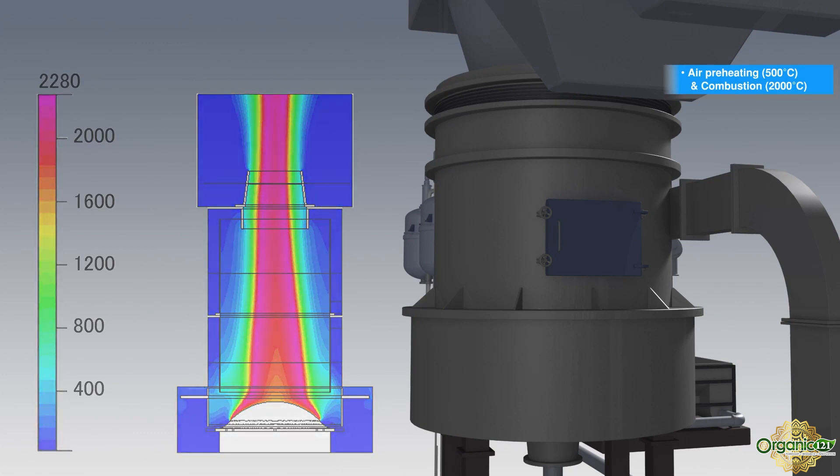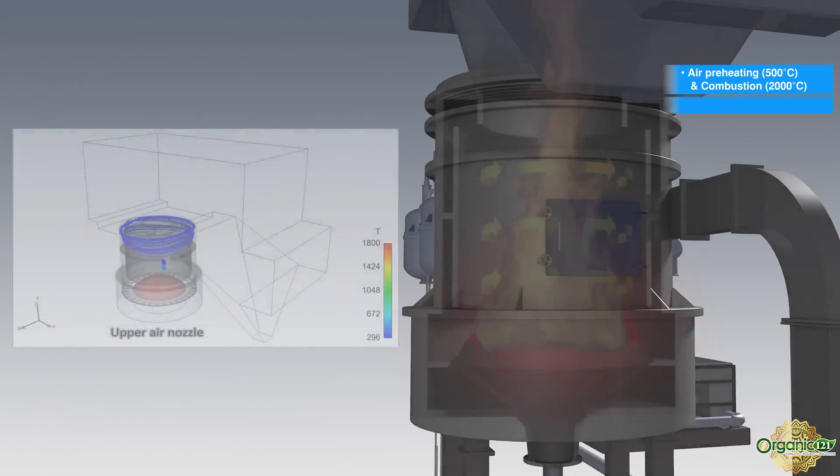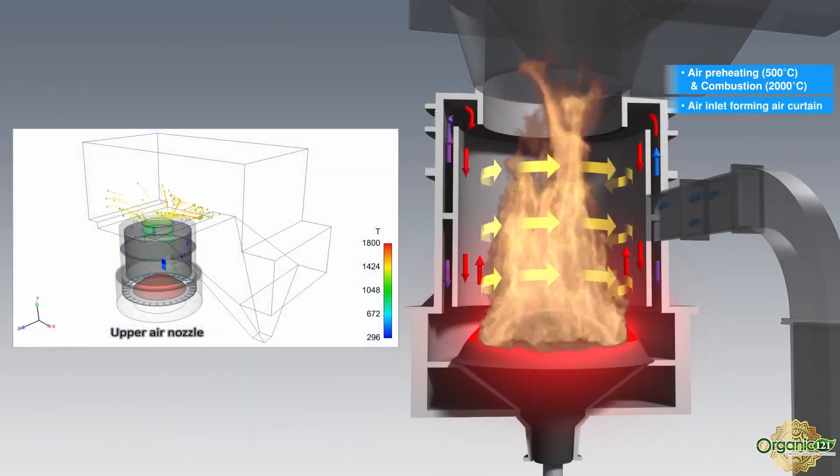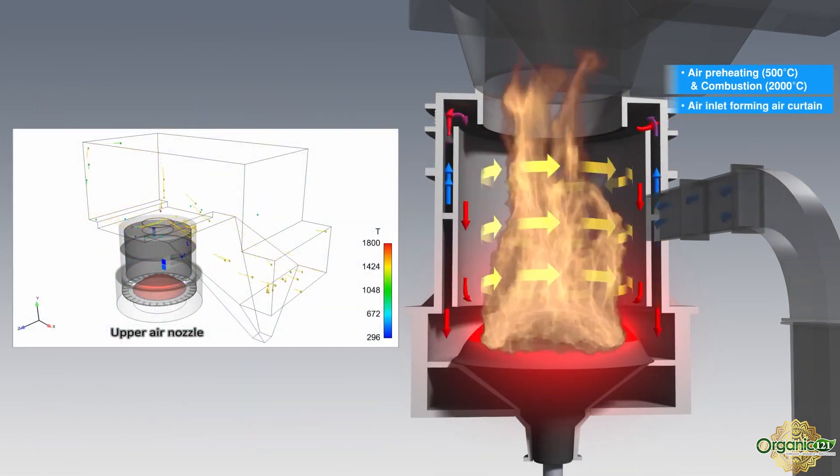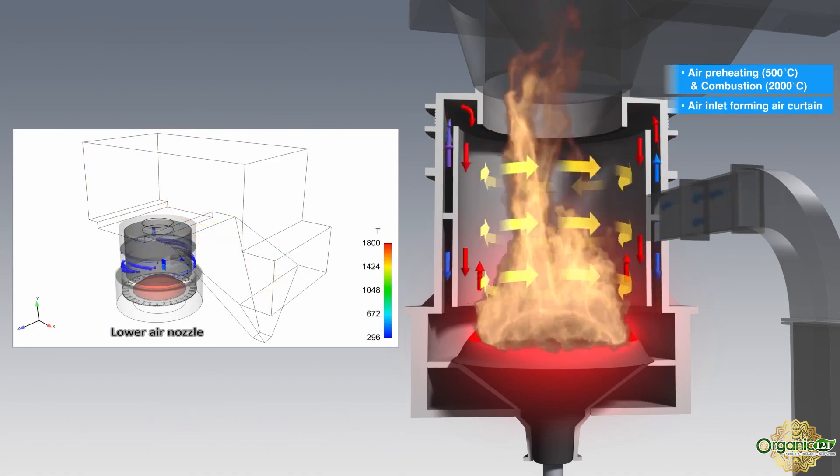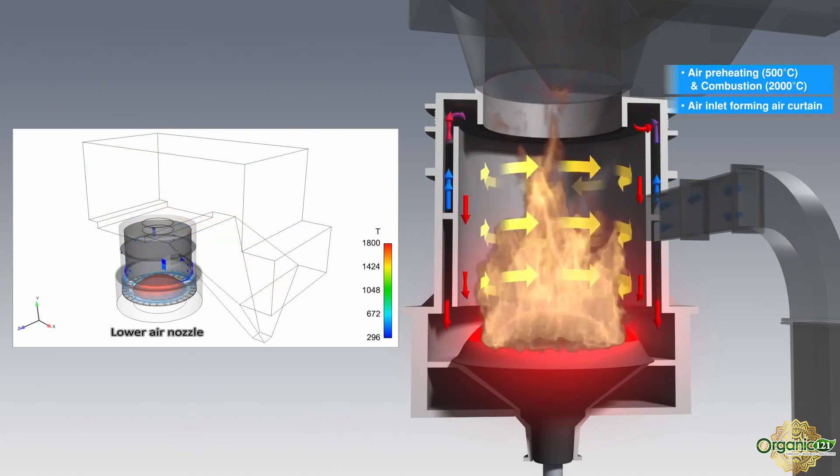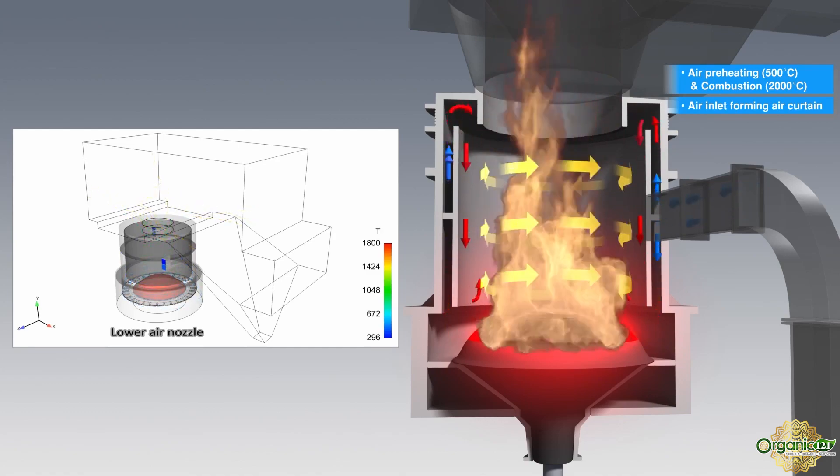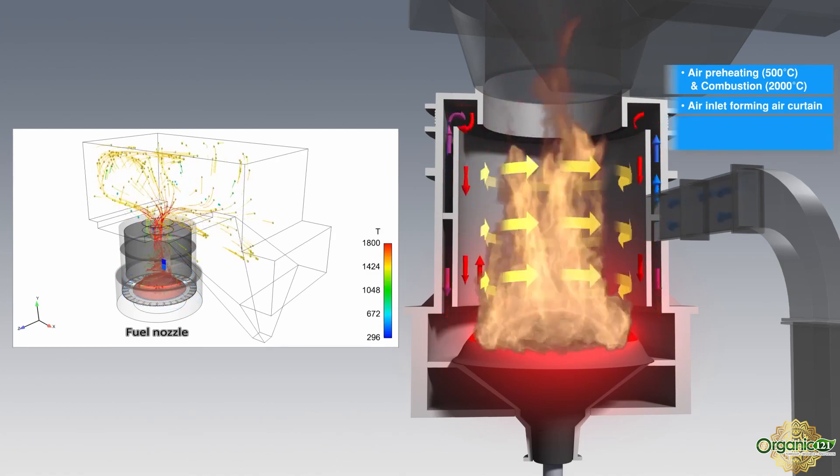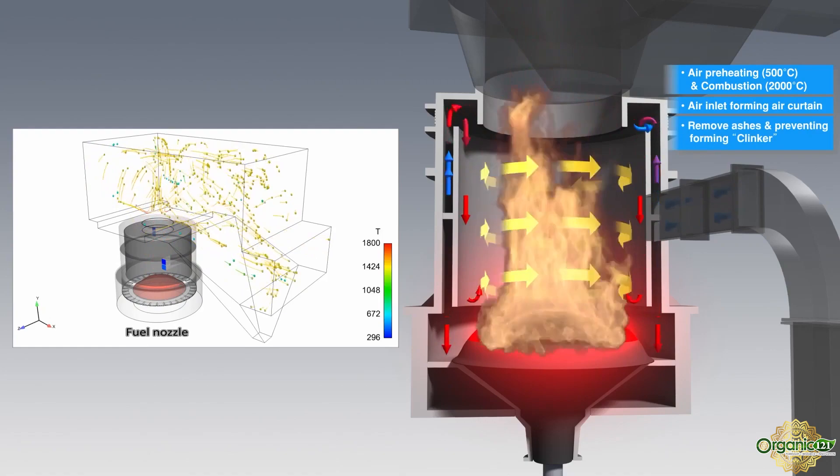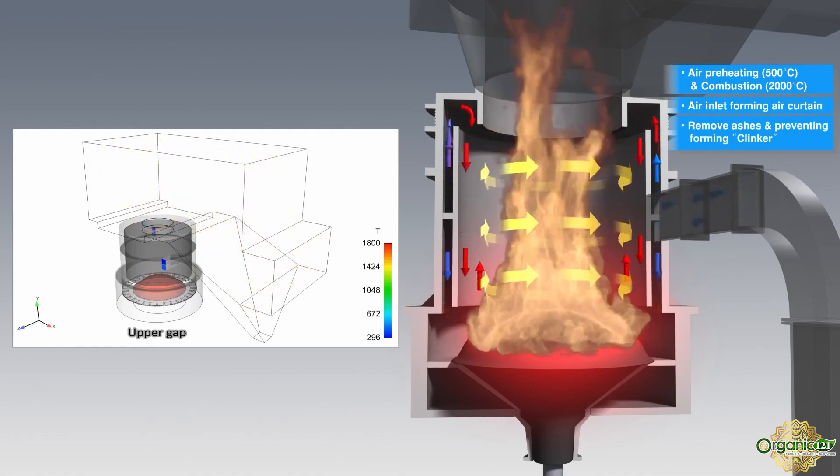Many other incinerators need a long time for heating up and this makes it costly to operate and causes time delay. Its strong rotational air flows into double cylindrical structure forming an air curtain. The air curtain moves from top to bottom between inner and outer wall and prevents high temperature combustion gas directly contacting the inner wall to prevent the clinker issue.